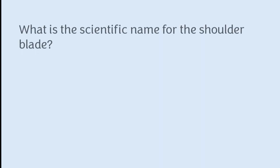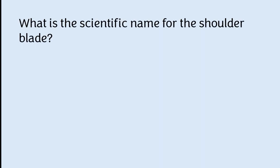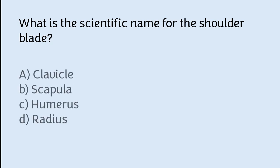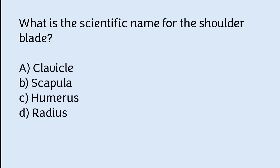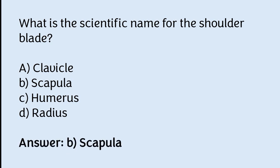What is the scientific name for the shoulder blade? Options: clavicle, scapula, humerus, or radius. The correct answer is option B — scapula is the scientific name for the shoulder blade.